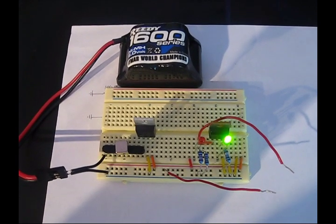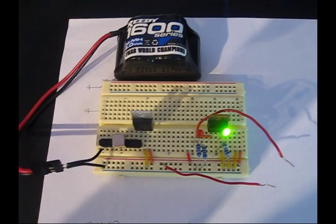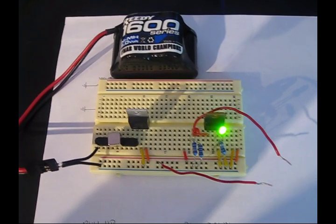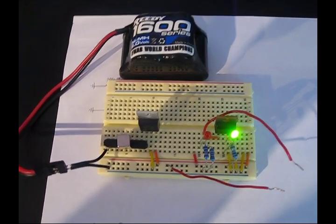Now with the pull-up resistor in place, the base of the NPN transistor is no longer floating. Before, when I touched my fingers to both ends of the nodes, the lights switched because the base was floating.